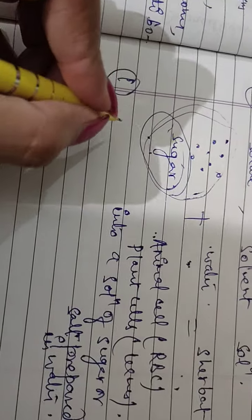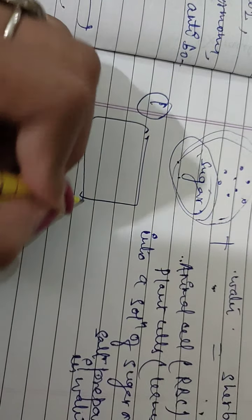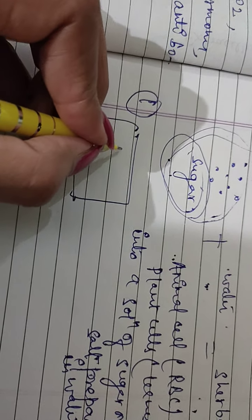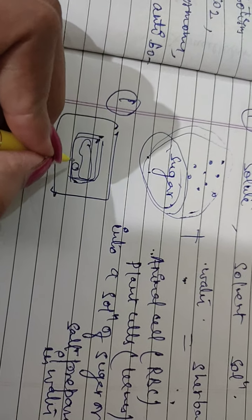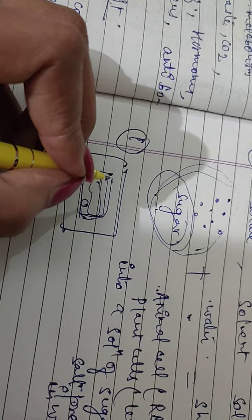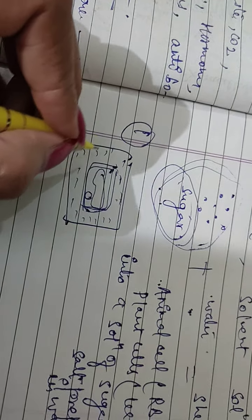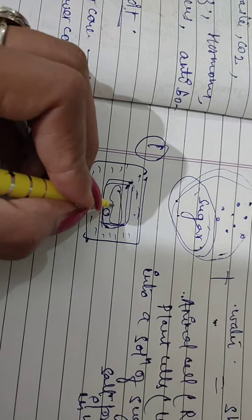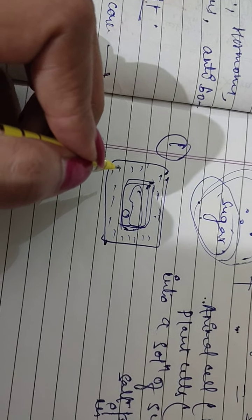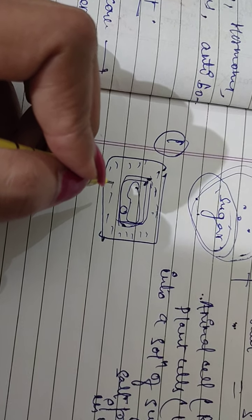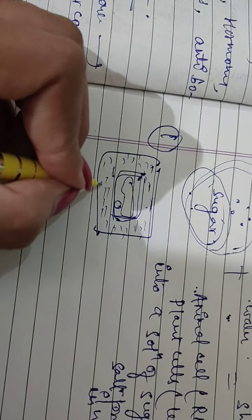First situation: if the medium surrounding the cell has a higher water concentration — that is, if the solution is very dilute — then the cell will gain water by osmosis. Such a solution is called a hypotonic solution.